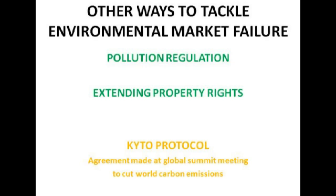Other ways to tackle environmental market failure include pollution regulation — the government could set a pollution quota and fine any firms that exceed it, though it's expensive and hard to monitor. Pollution permits tend to work well at an international level. Extending property rights addresses the tragedy of the commons — if no one owns the land, no one has the incentive to protect it. The fishing industry is a big example. The government could put people in charge of land or increase taxes so firms have an incentive to protect the environment to keep production costs low and remain competitive.